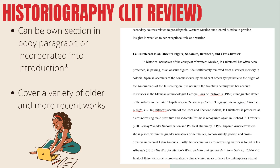I've seen some folks integrate the lit review into their introduction section, using it to talk about where they disagree with their sources and then constructing their argument from that — essentially articulating why they disagree and building their thesis statement around that perspective. The point is that I want to see some sort of discussion about how your secondary sources have addressed this topic over time. You can make it its own section, or incorporate it into the introduction.